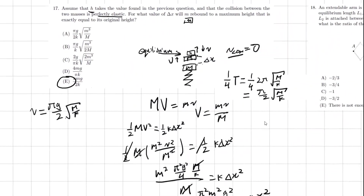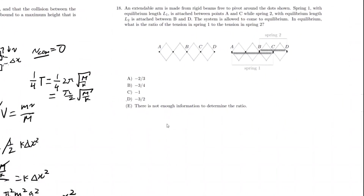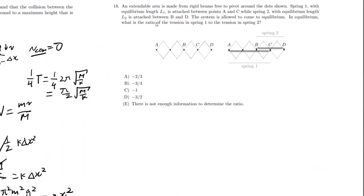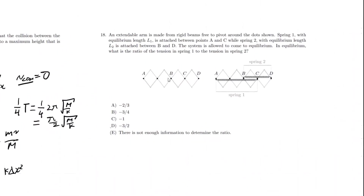Let's move on to number 18, which is also quite interesting. An extendable arm is made from rigid beams, free to pivot around the dots as shown. Spring 1, with equilibrium length L₁, is attached between points A and C, while spring 2, with equilibrium length L₂, is attached between B and D. The system is allowed to come to equilibrium. In equilibrium, what is the ratio of the tension in spring 1 to the tension in spring 2? I'll let the tension be T₁ here and T₂ here.